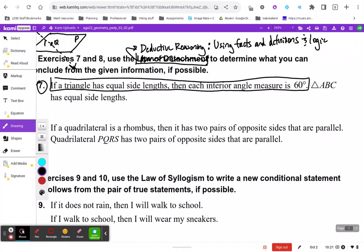Triangle ABC has equal side lengths. Well, then it follows that using deductive reasoning, if triangle ABC has equal side lengths, then I know that triangle ABC has interior angle measures of 60.